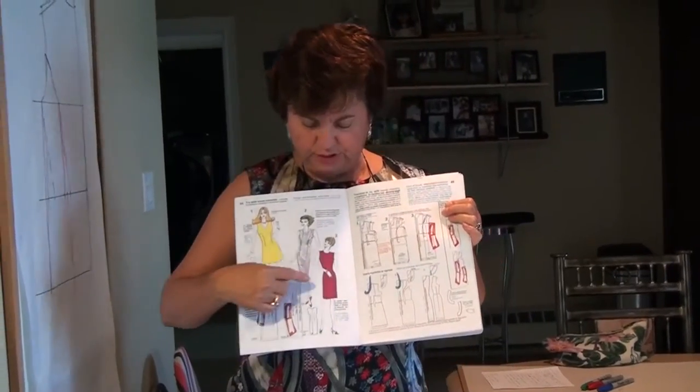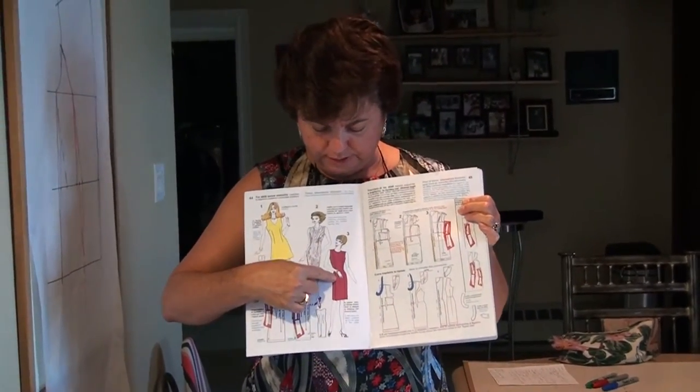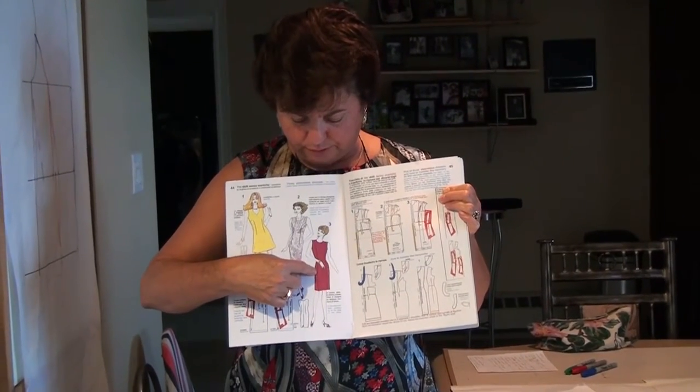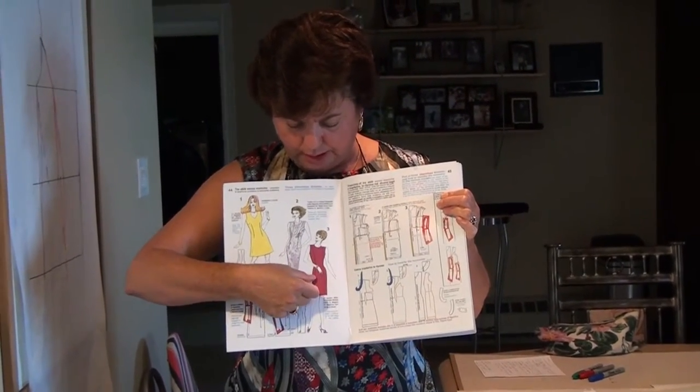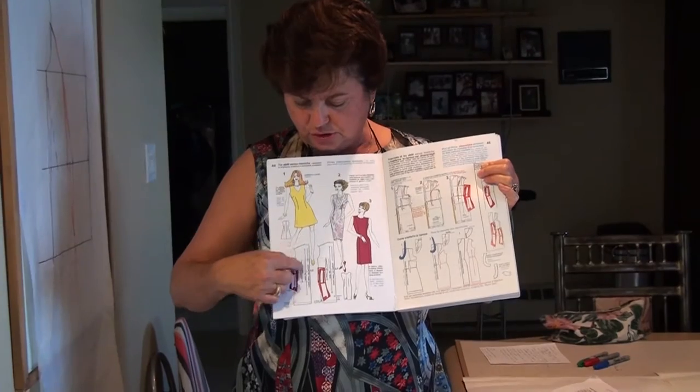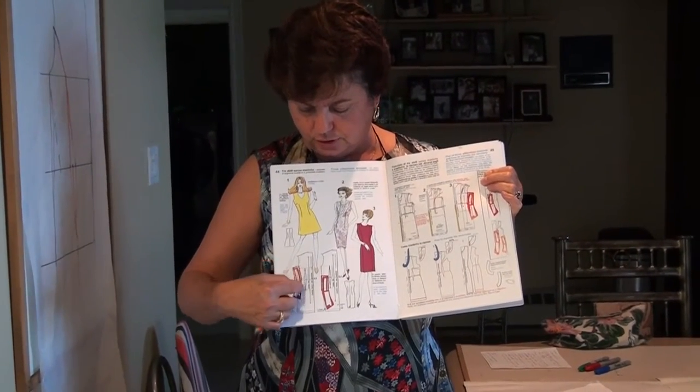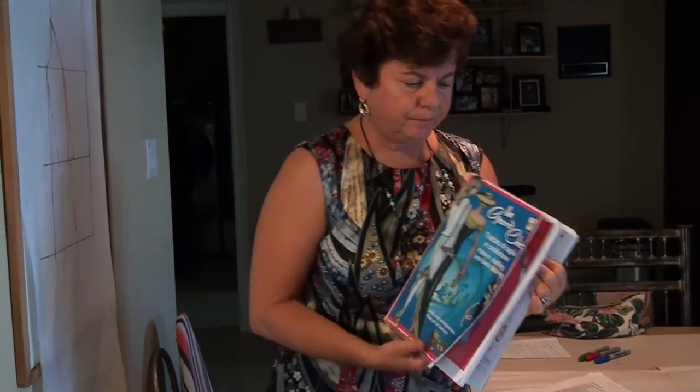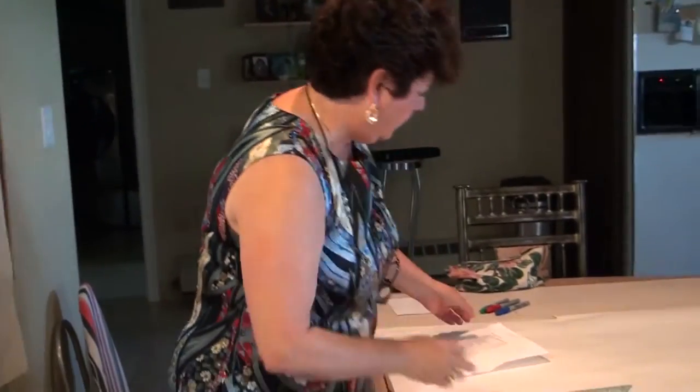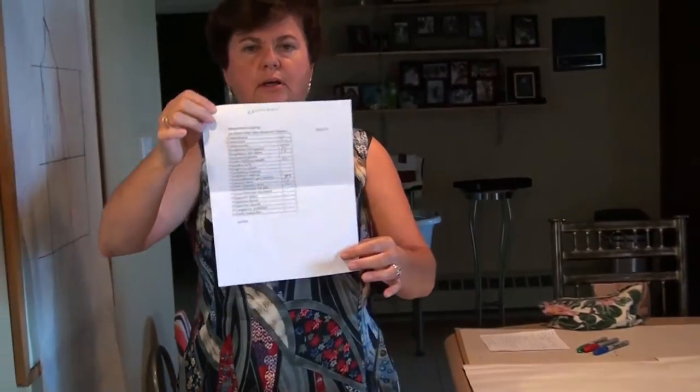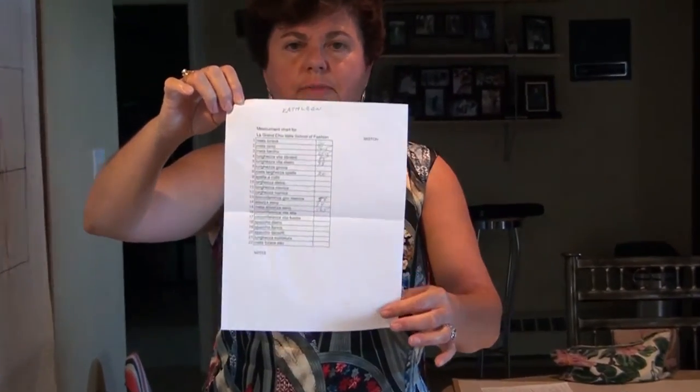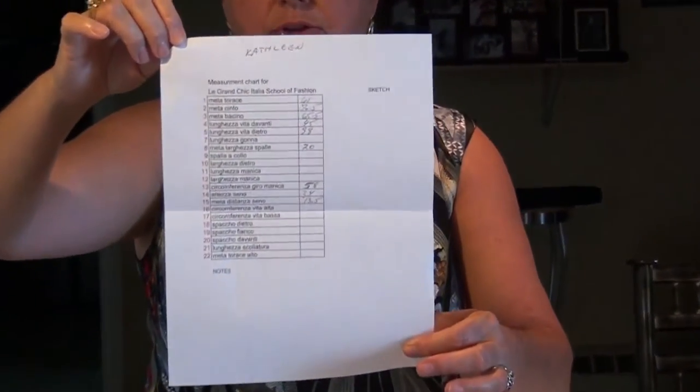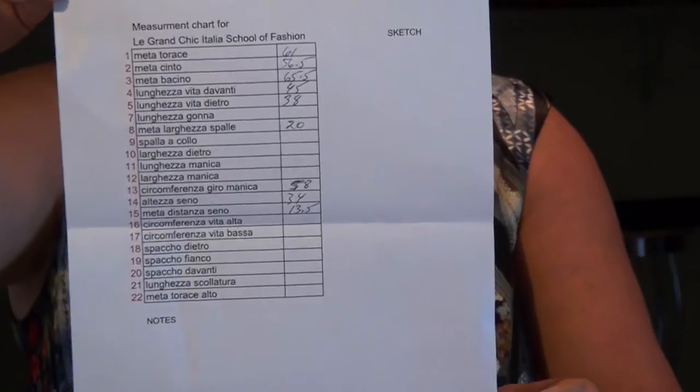For this demo today I'm going to be doing a front princess lines, a bodice with the front princess lines only going to the hip, and a back, just a sheath at the back, meaning it just has the fisheye darts, just for today's demonstration. The measurements are here and a friend and neighbor of mine graciously volunteered to be my model. She'll be here towards the end of the video to fit the body.